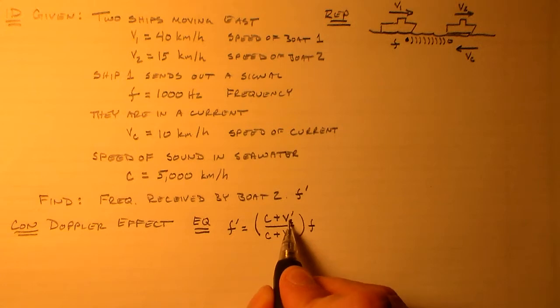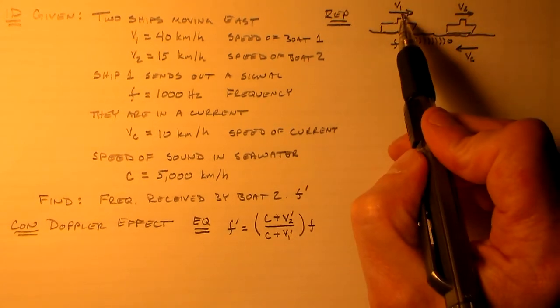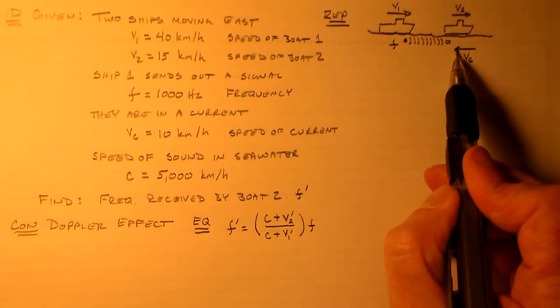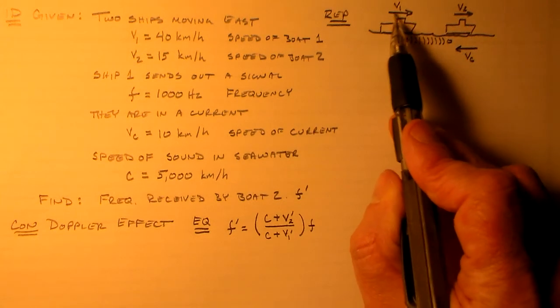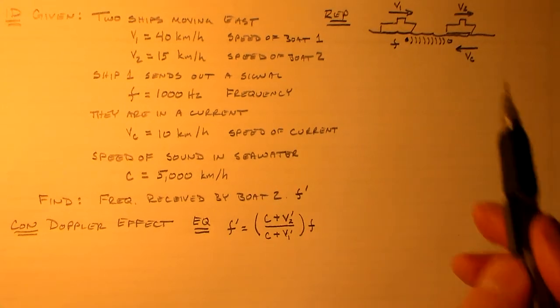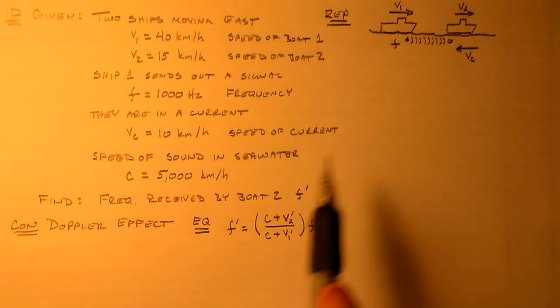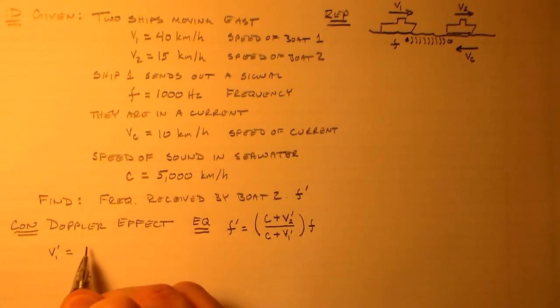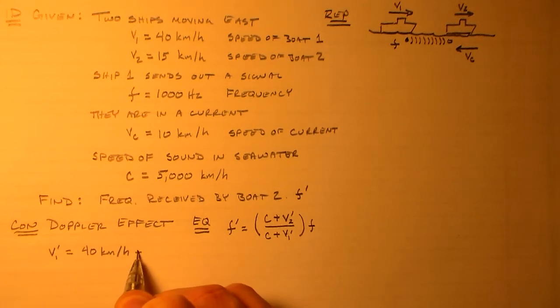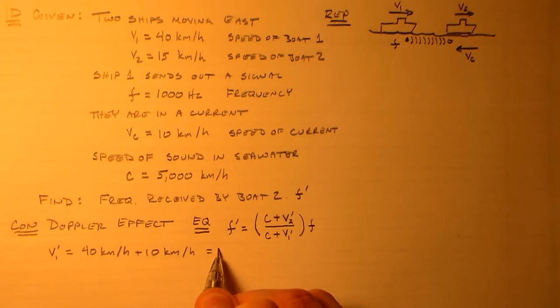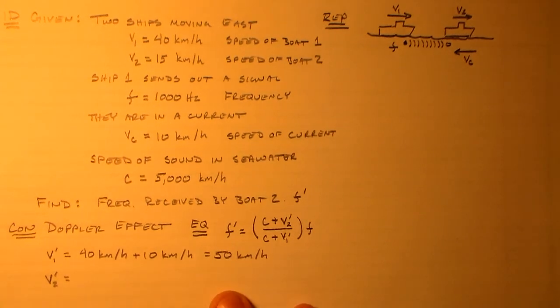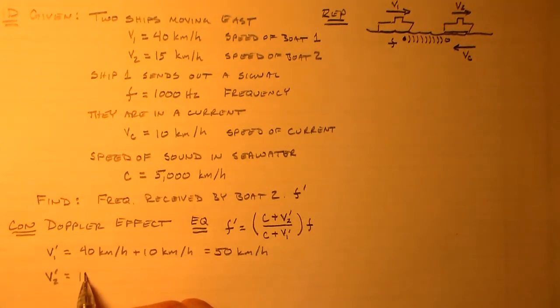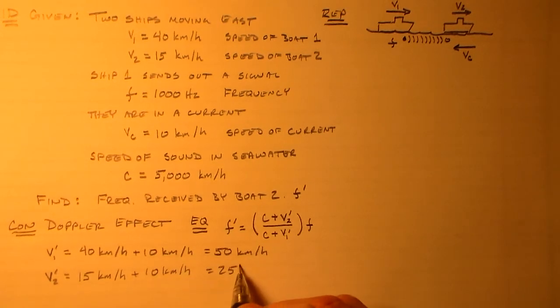So now we've got to actually work everything out. So the first thing probably is to get these magnitudes. They're actually fairly easy. We just have to say that this guy's moving at some speed, but it's relative to this current that's in the opposite direction. So it's actually going faster. It's going faster relative to the current than it is to some third party out here. So we should say this V1 prime is going to be 40 kilometers per hour plus 10 kilometers per hour, which is equal to 50 kilometers per hour. And this V2 prime is going to be 15 kilometers per hour plus 10 kilometers per hour, which is equal to 25 kilometers per hour.